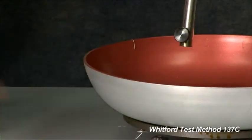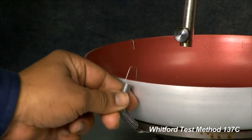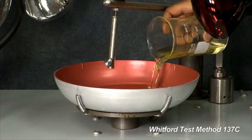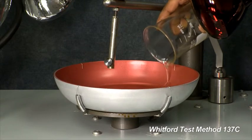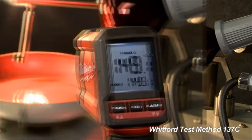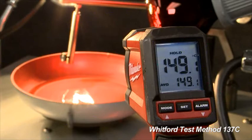First, secure the test pan to the machine with clamps. To simulate normal cooking conditions, the pan is covered with oil, then heated with infrared lamps to a cooking temperature of 150 degrees centigrade or 300 degrees Fahrenheit.